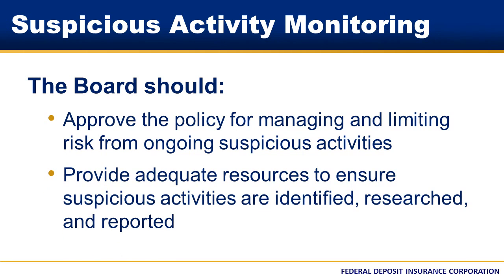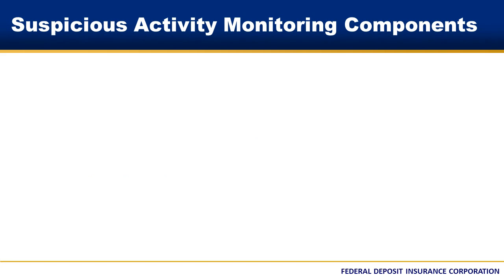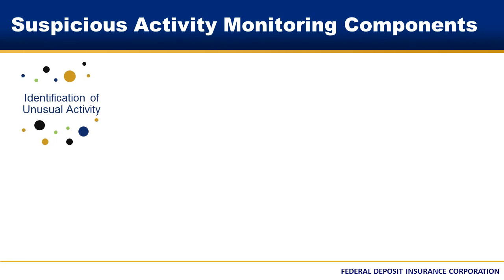The board should provide adequate resources to ensure that suspicious activities are appropriately identified, researched, and reported, taking into account the bank's overall risk profile and the volume of transactions. There are five key components to an effective monitoring and reporting system. The first component is identification or alert of unusual activity. Alerts may come from a teller processing a suspected structured transaction, law enforcement inquiries, or the review of internal monitoring and reports. Alerts can also be generated from a transaction-based system.